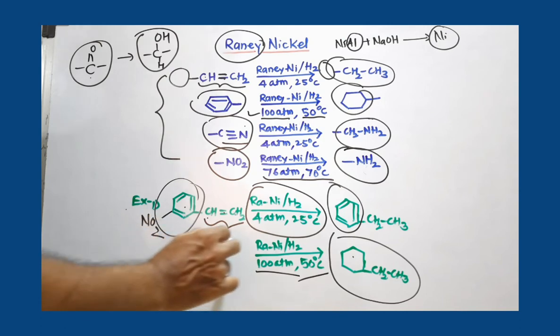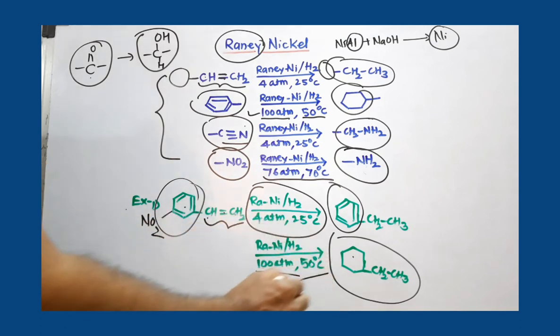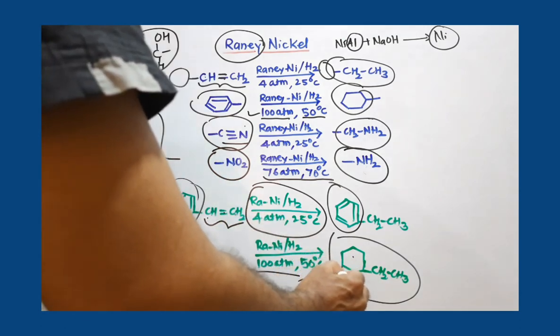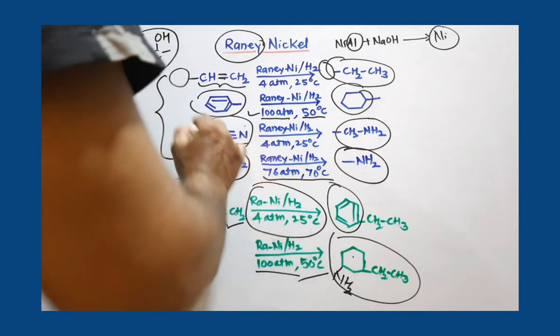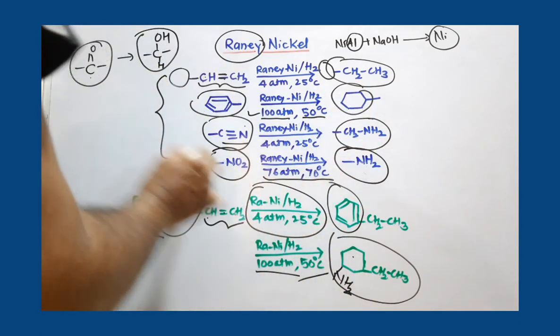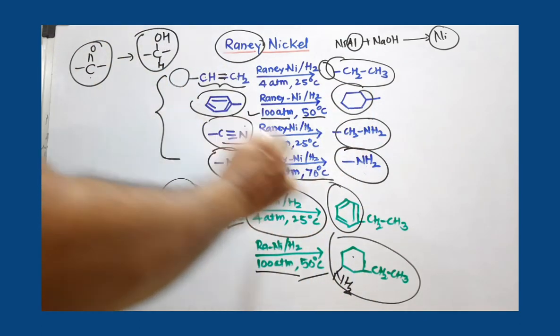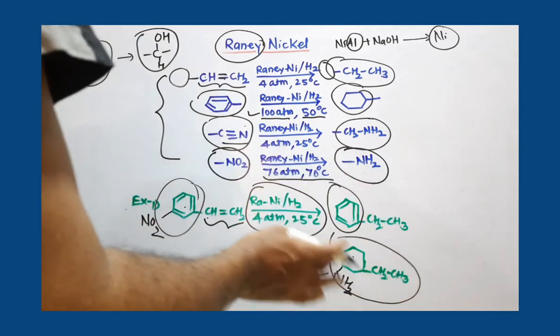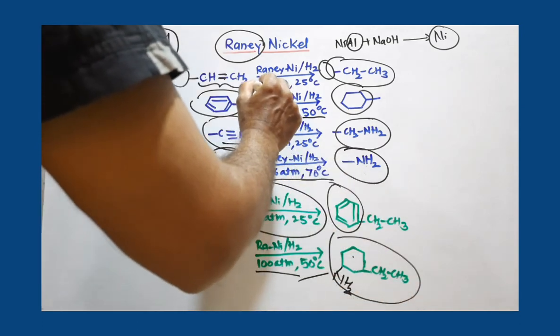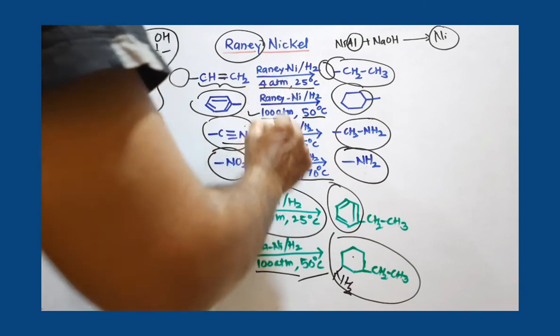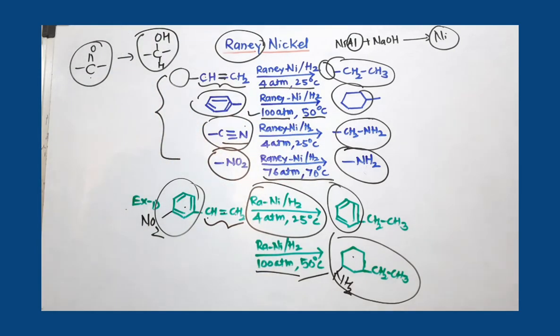Suppose if NO2 group is there and it is subjected to this reaction condition, this is converted to NH2. You have to remember this 4 or 5 conversions and do accordingly. Very much important part is to remember these reaction conditions for Raney Nickel. Thank you.